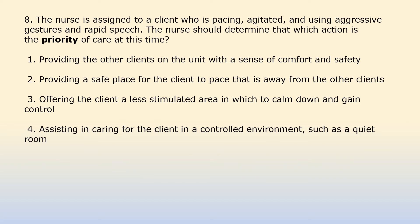The nurse is assigned to a client who is pacing, agitated, and using aggressive gestures and rapid speech. The nurse should determine which action is the priority of care at this time. Option 1: Providing the other clients on the unit with a sense of comfort and safety. Option 2: Providing a safe place for the client to pace that is away from the other clients. Option 3: Offering the client a less stimulated area in which to calm down and gain control. Option 4: Assisting in caring for the client in a controlled environment such as a quiet room.